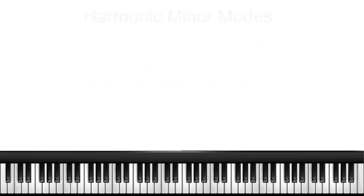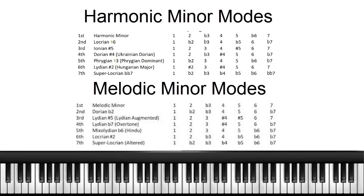There are two additional minor scales that are beyond the scope of this lesson, but I'm going to mention them here. One is the harmonic minor, and the other one is the melodic minor. The melodic minor generates a useful scale on the seventh degree — that's the altered scale — and that's a dominant scale we'll talk about in a subsequent lesson.